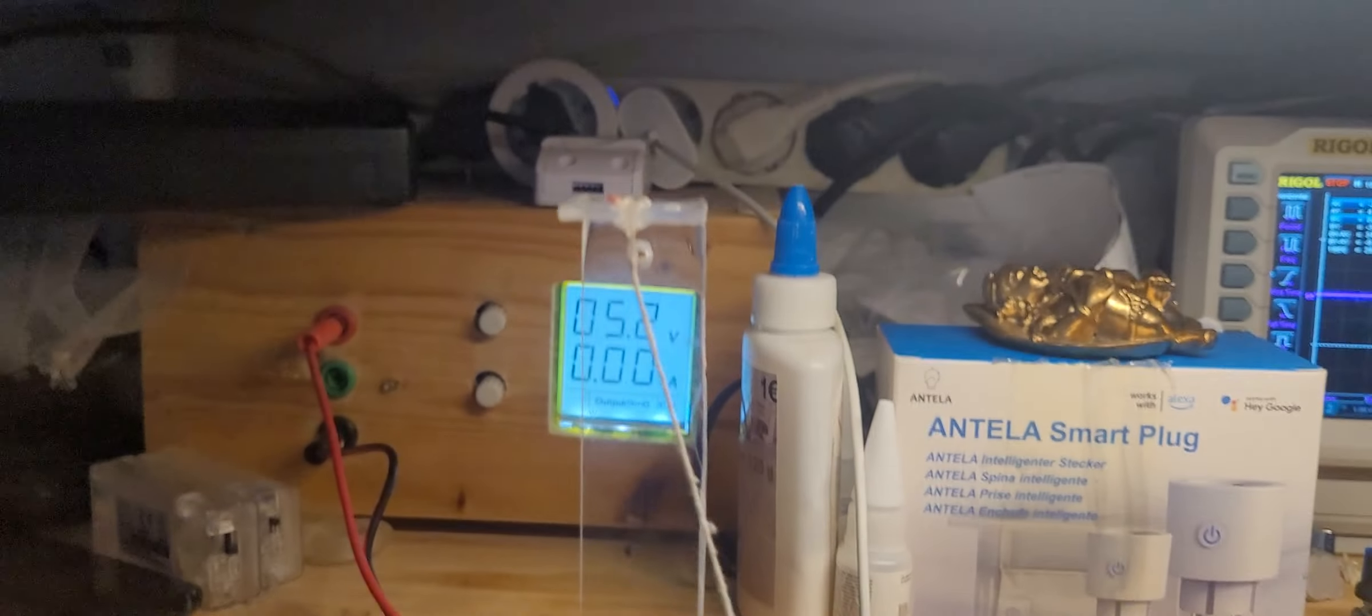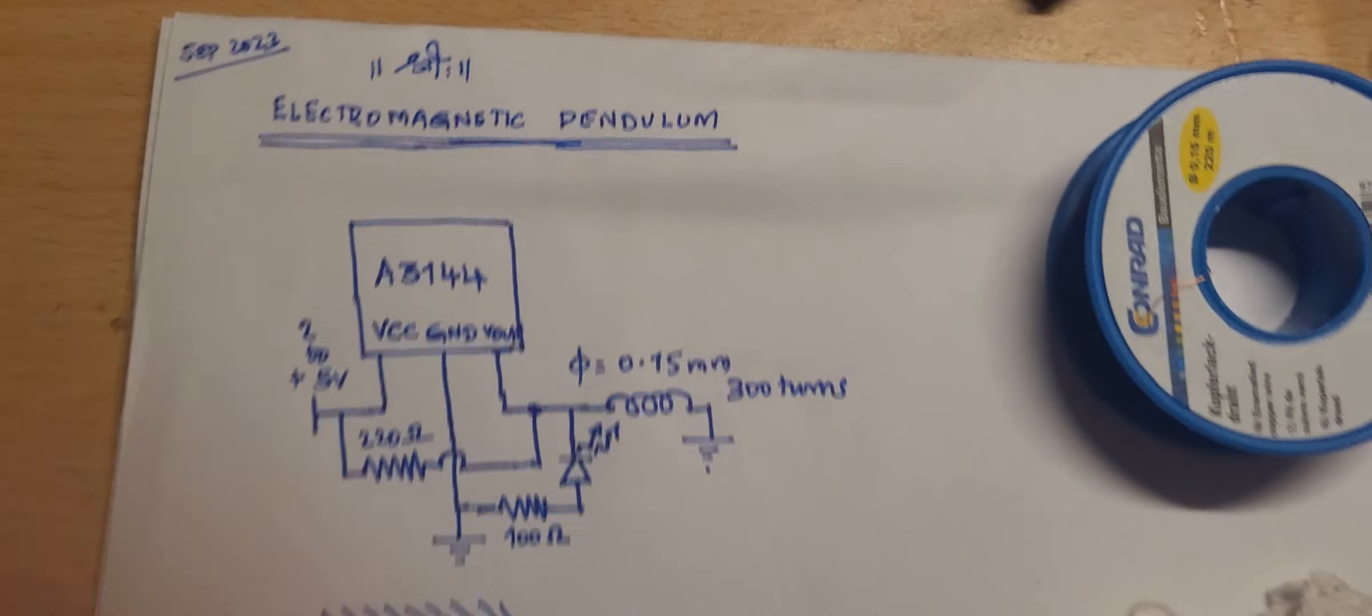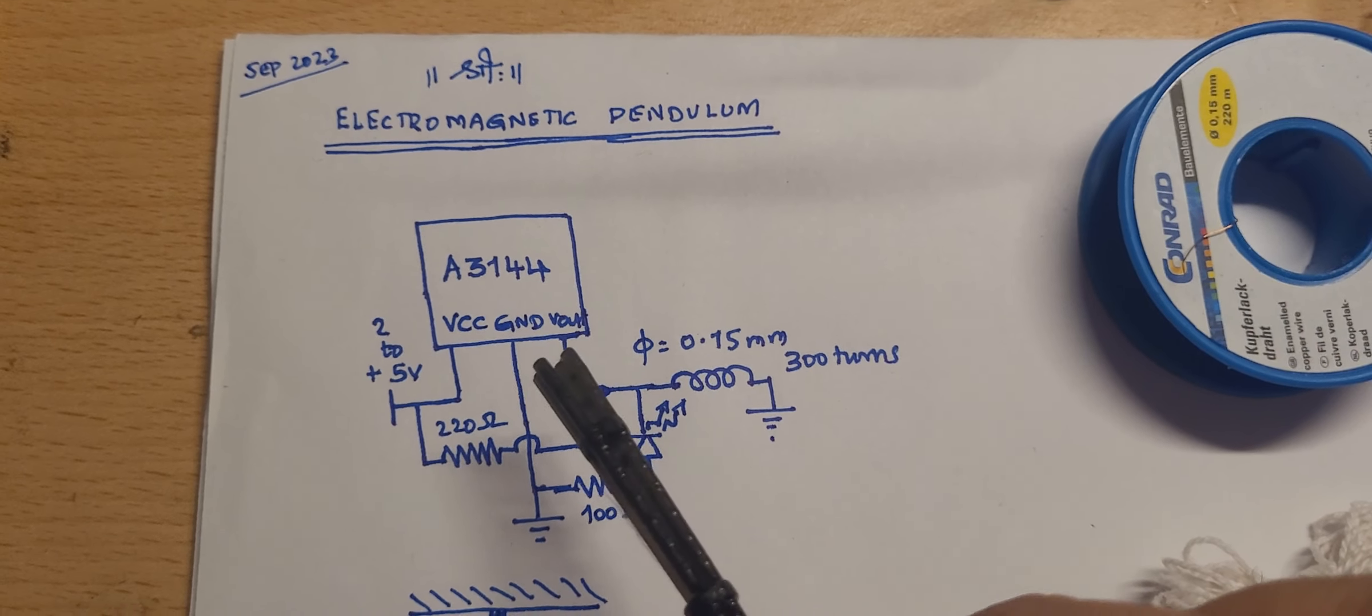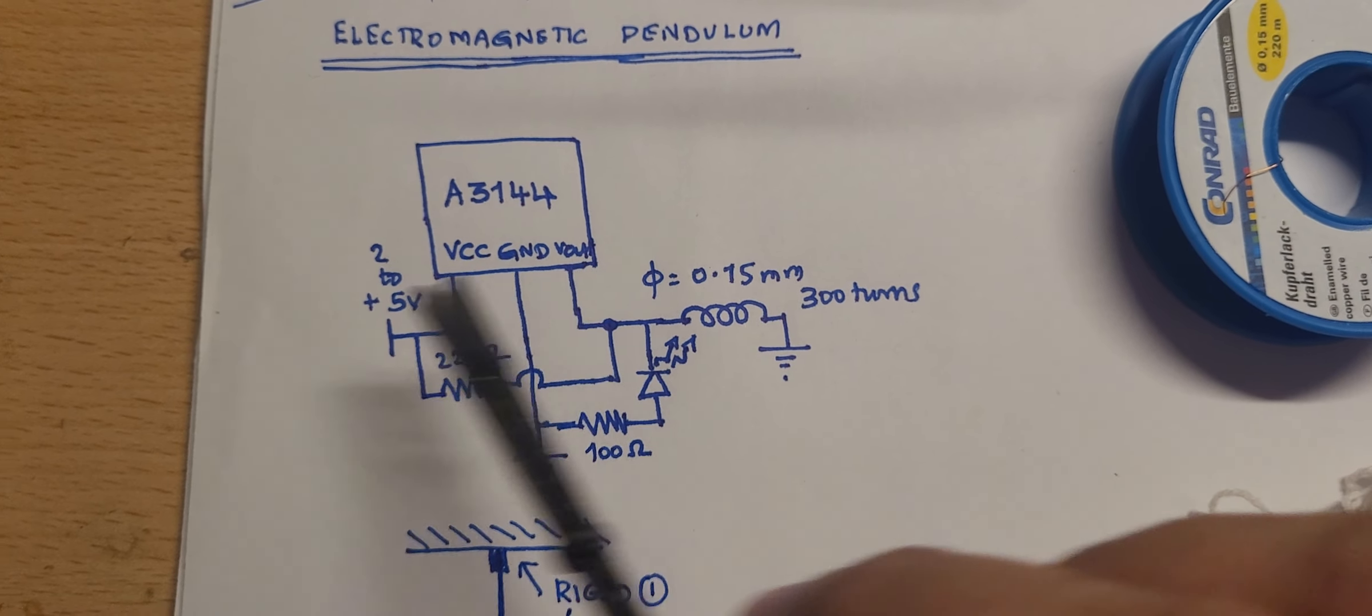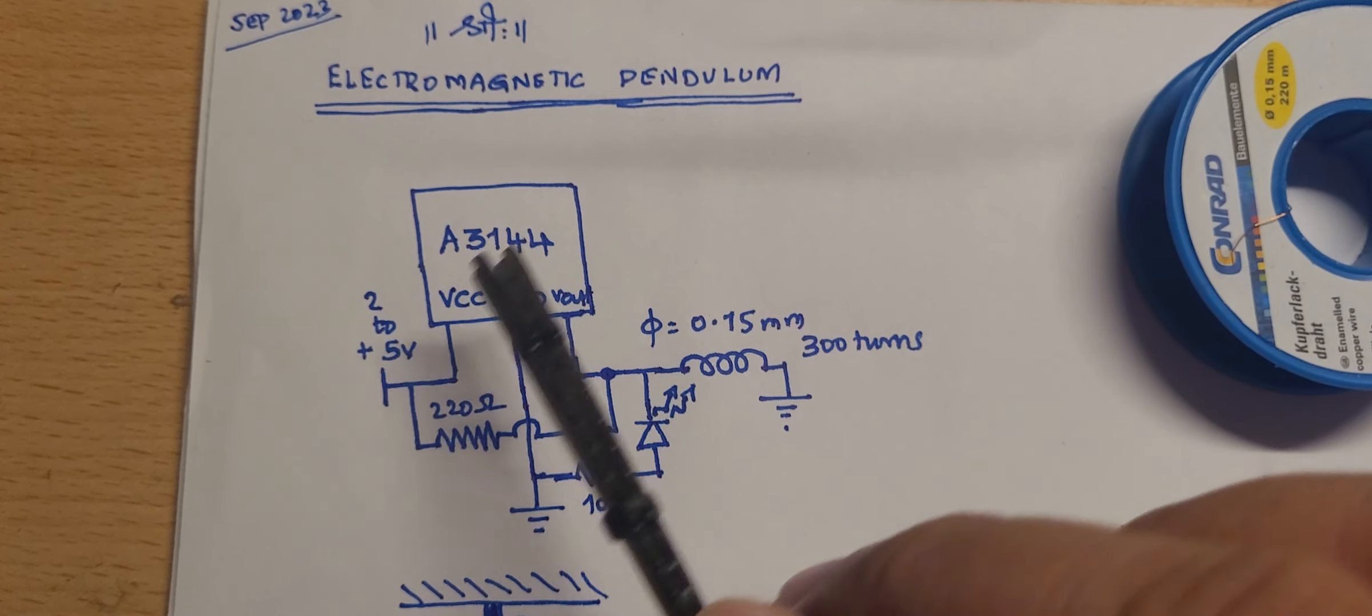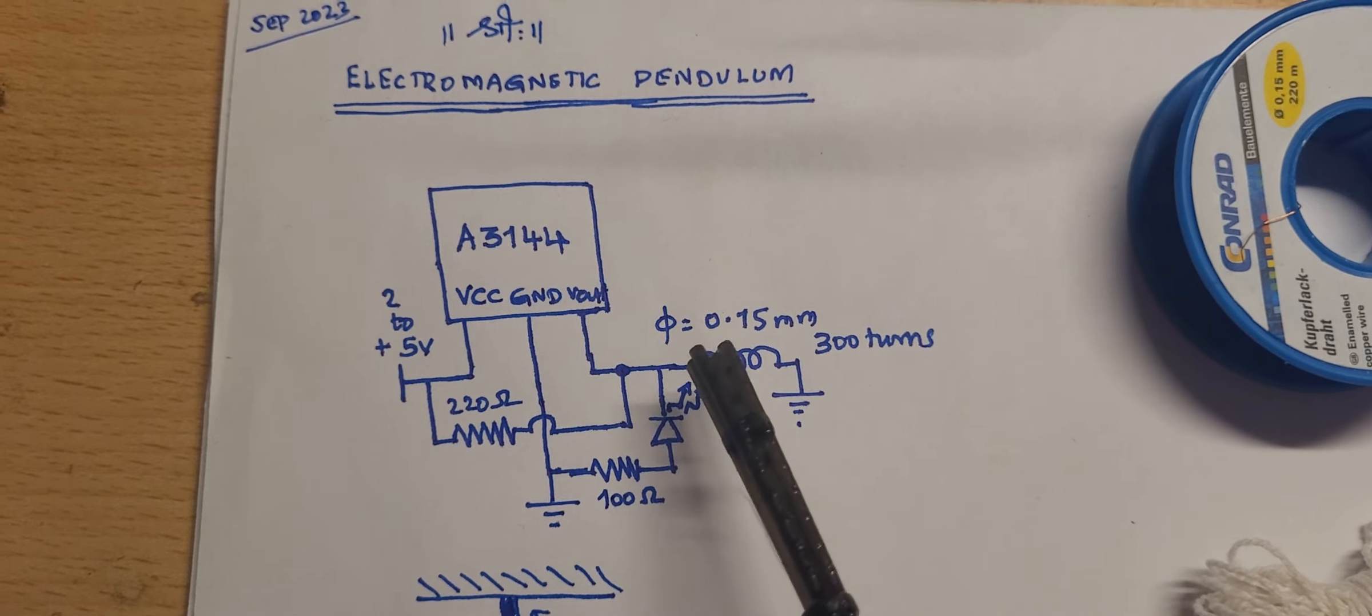I can tell you how it basically works. It's based on a very simple circuit like I show here. You have an A3144 hall sensor. This basically turns on when you pass a magnetic field through it.